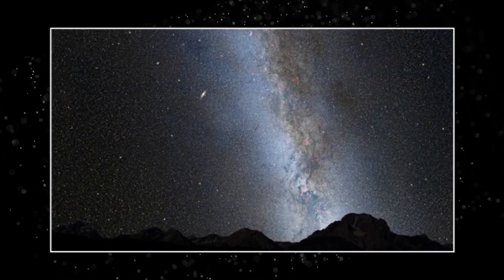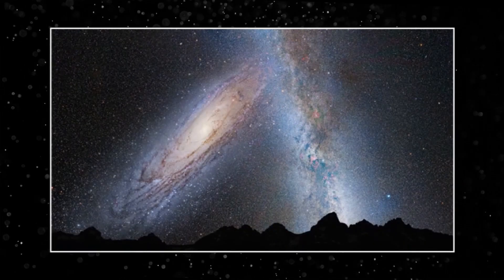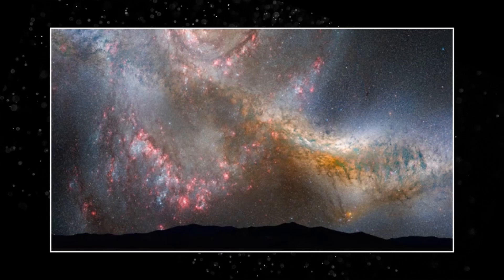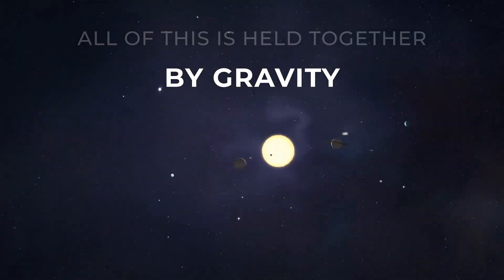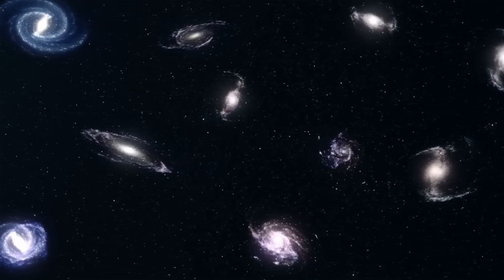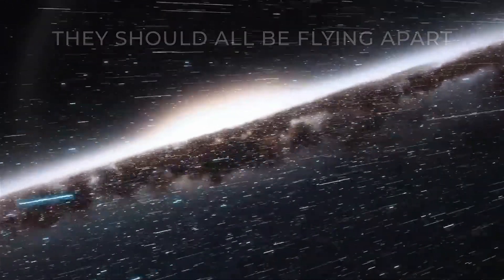We all know that when the first stars formed, they collected into galaxies, galaxies began to cluster, clumps of matter collected, and planets began to form around the sun creating our solar system. And all of this is held together in place by gravity. However, there's not enough visible matter to provide the gravity needed to hold them together. From what we can see, they should all be flying apart. But they don't.